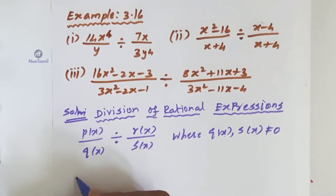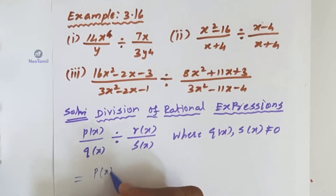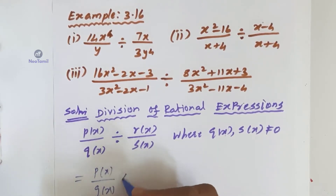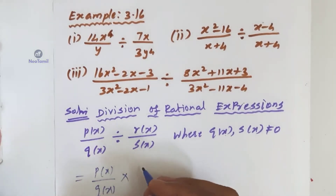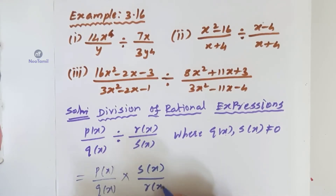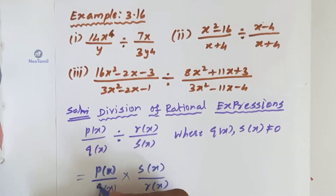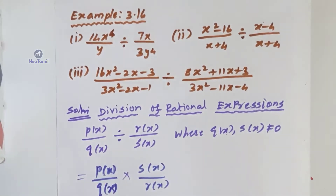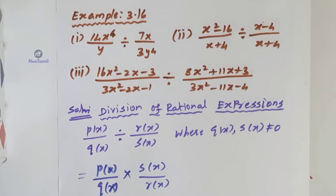If you need to divide, you apply the division concept: P of X divided by Q of X, multiplied by S of X divided by R of X. The divide symbol becomes multiply, and the second expression is taken as its reciprocal.